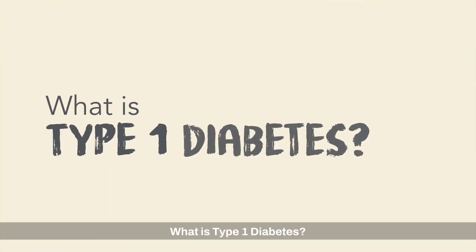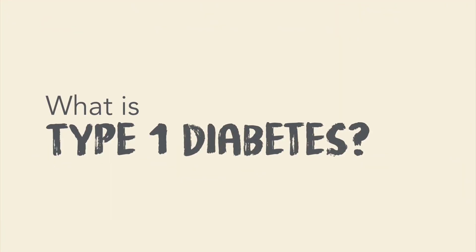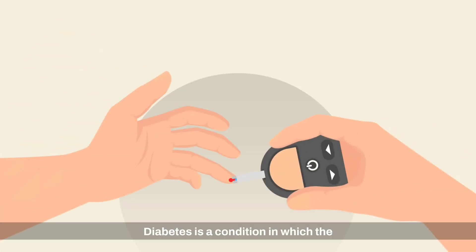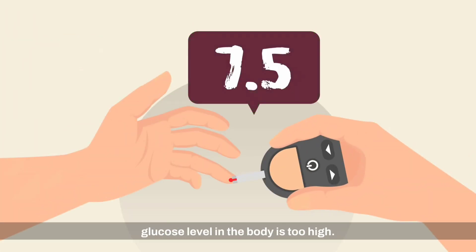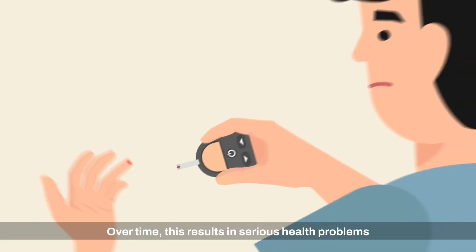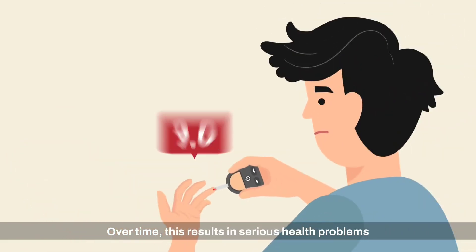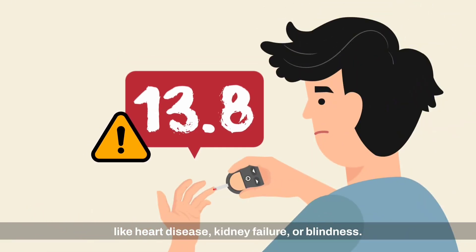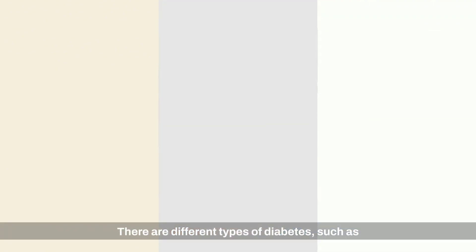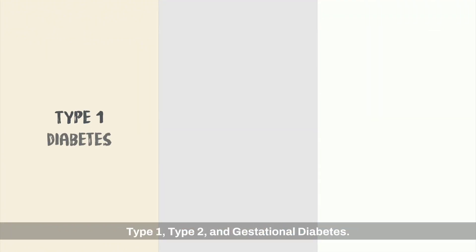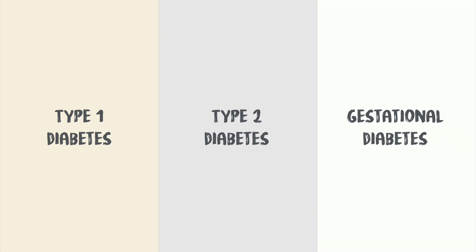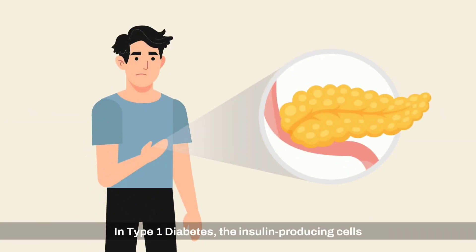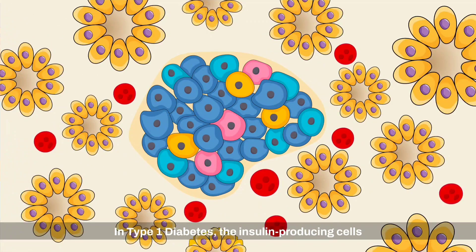What is type 1 diabetes? Diabetes is a condition in which the glucose level in the body is too high. Over time, this results in serious health problems like heart disease, kidney failure, or blindness. There are different types of diabetes, such as type 1, type 2, and gestational diabetes.